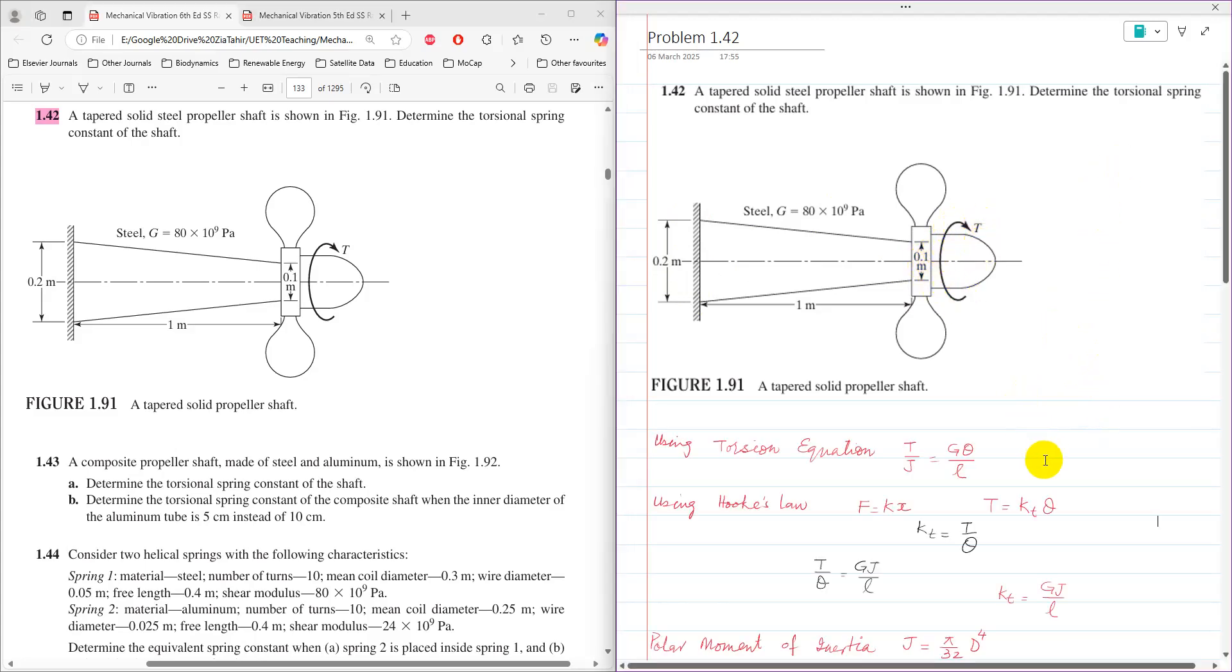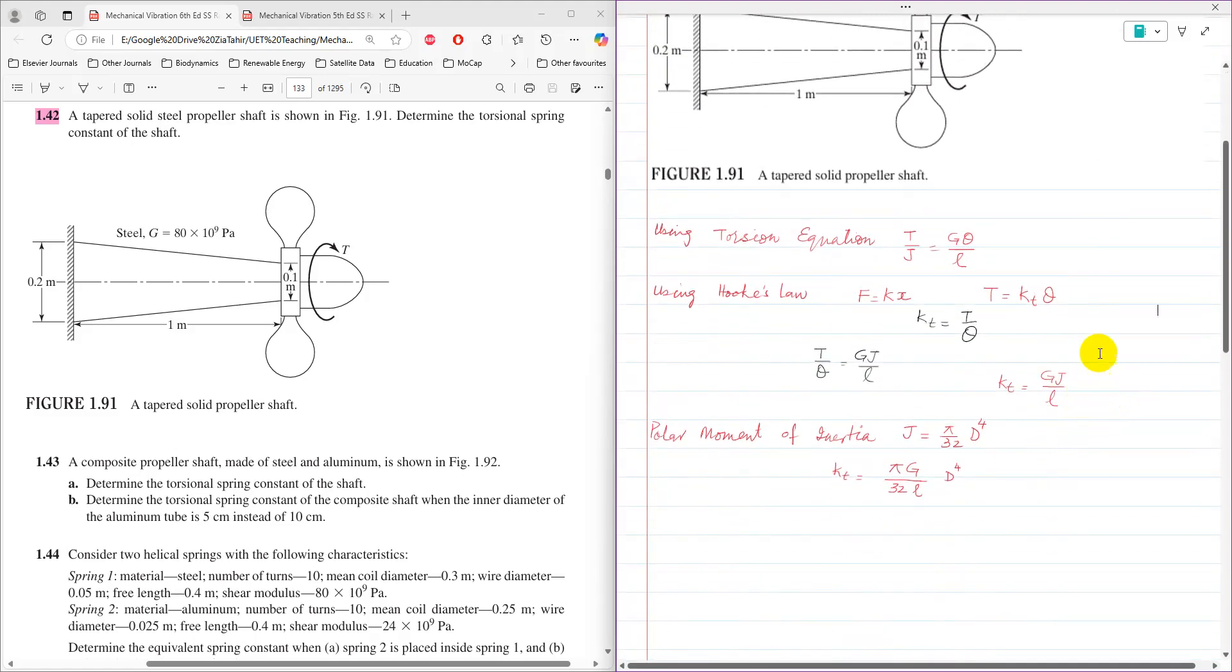So torsional spring constant of shafts can be calculated using torsion equation and Hooke's law, as T is equal to KT theta, and torsion equation T over J is equal to G theta over L.